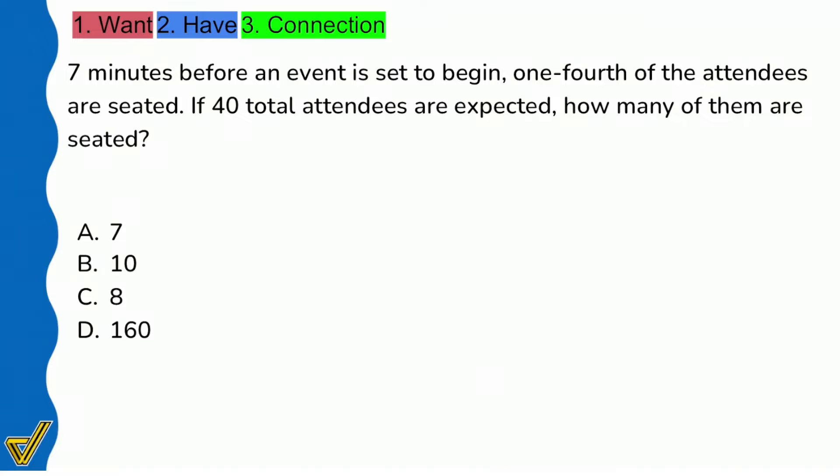Here we go. First things first, as always we're going to read the question: how many of them are seated? So we don't want to confuse ourselves with all the information. Just read the question sentence itself, starting with the who, what, when, where, how many, which of the following. That's what we want to focus on.